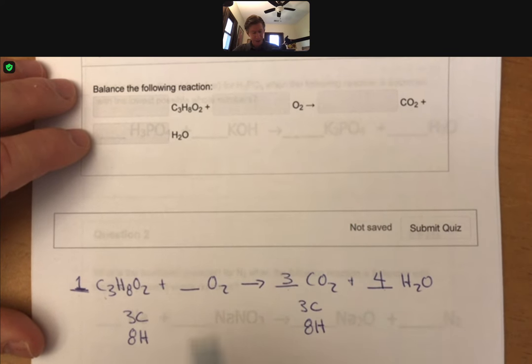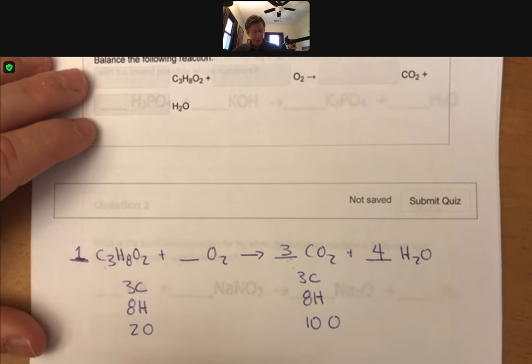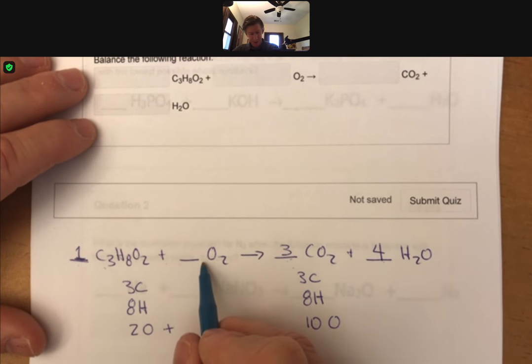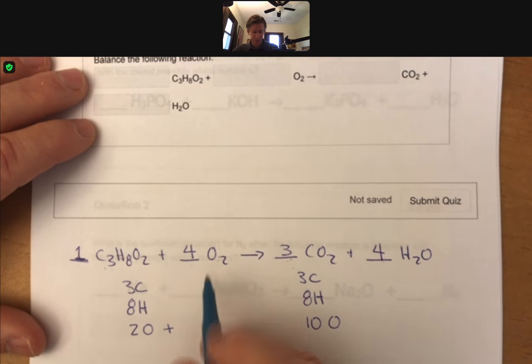So far I have two oxygens and I have three times two, which is six plus four. I have ten oxygens on the product side. Let's keep that on the page. So I need eight more and oxygens come two at a time. So I'm going to put a four here. Four times two is eight for a total of ten on both sides.